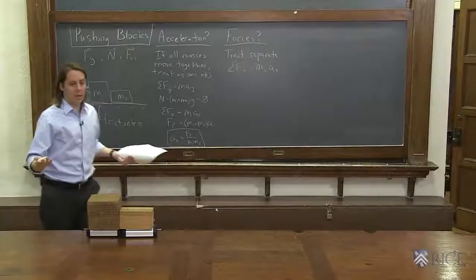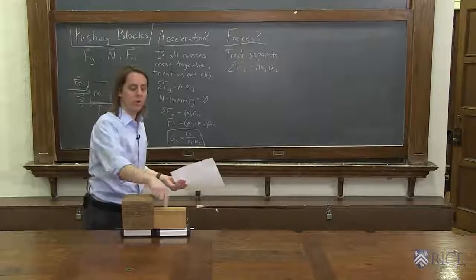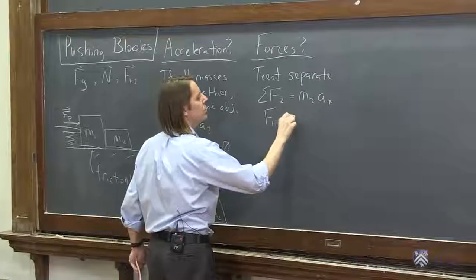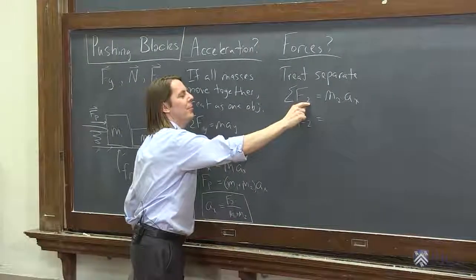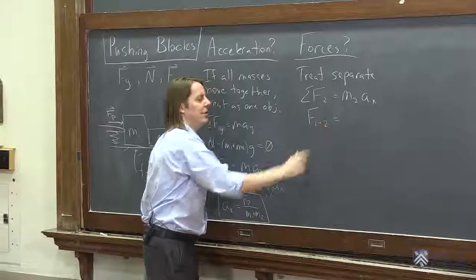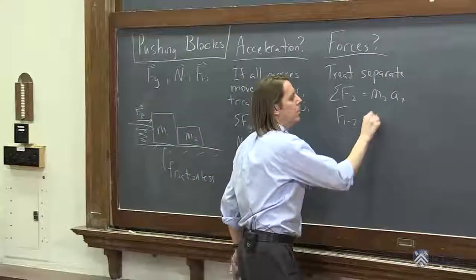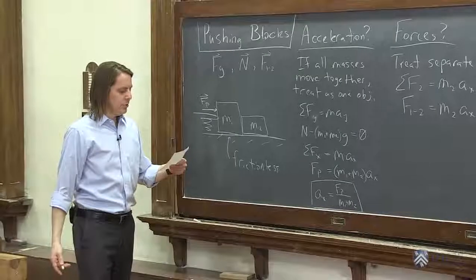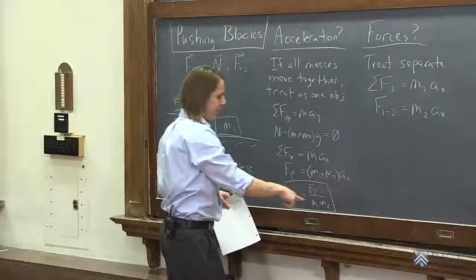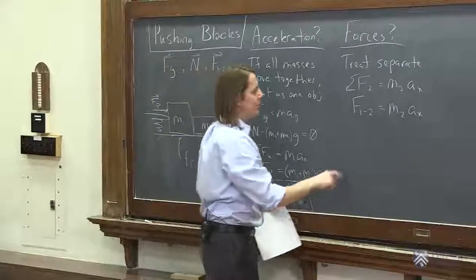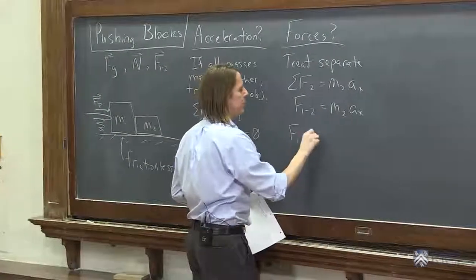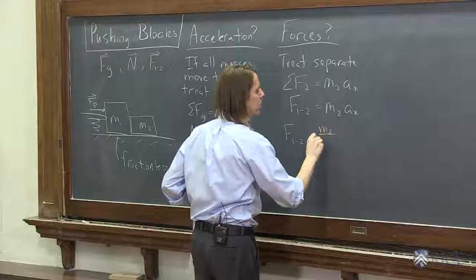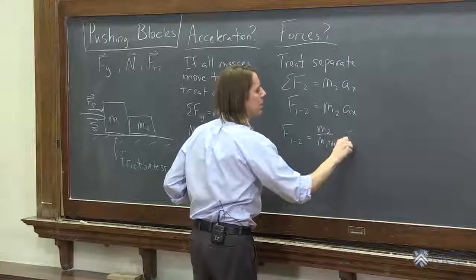So let's do Newton's second law. And now we're just doing the x direction. The sum of the forces on 2 is the mass of 2 times the acceleration in the x that we already found. So what are all the forces on 2? It's not me. I'm not pushing it. It's that block 1 is pushing on block 2. So all the forces on 2 is F1 on 2. That's equal to M2 times acceleration in the x. So all we've got to do is substitute our acceleration. So the force of 1 on 2 shows you that it's M2 over M1 plus M2 times Fp.